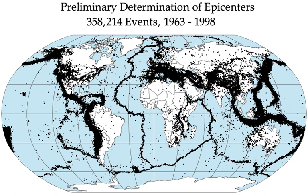Strike-slip faults tend to be oriented near vertically, resulting in an approximate width of 10 kilometers within the brittle crust, thus earthquakes with magnitudes much larger than 8 are not possible. Maximum magnitudes along many normal faults are even more limited because many of them are located along spreading centers, as in Iceland, where the thickness of the brittle layer is only about 6 kilometers. In addition, there exists a hierarchy of stress level in the three fault types: thrust faults are generated by the highest, strike-slip by intermediate, and normal faults by the lowest stress levels.